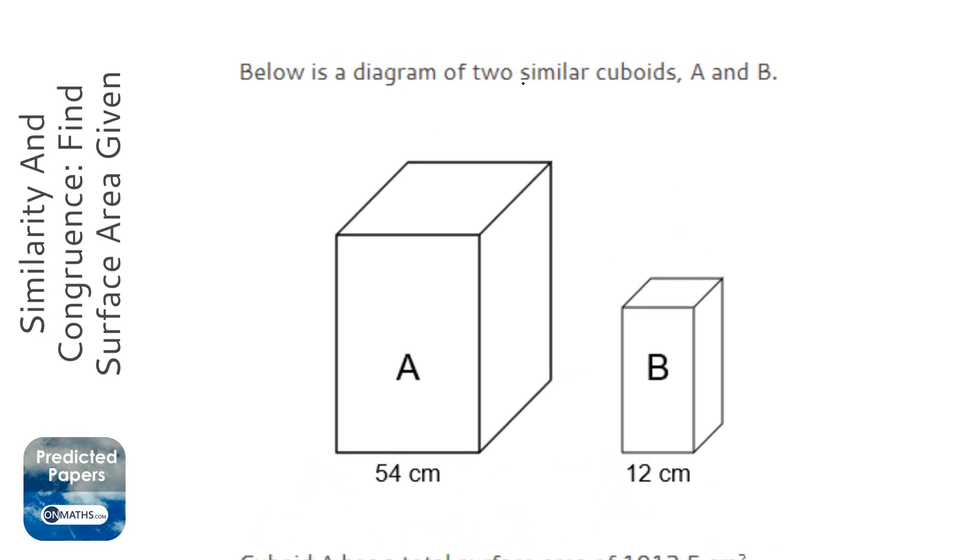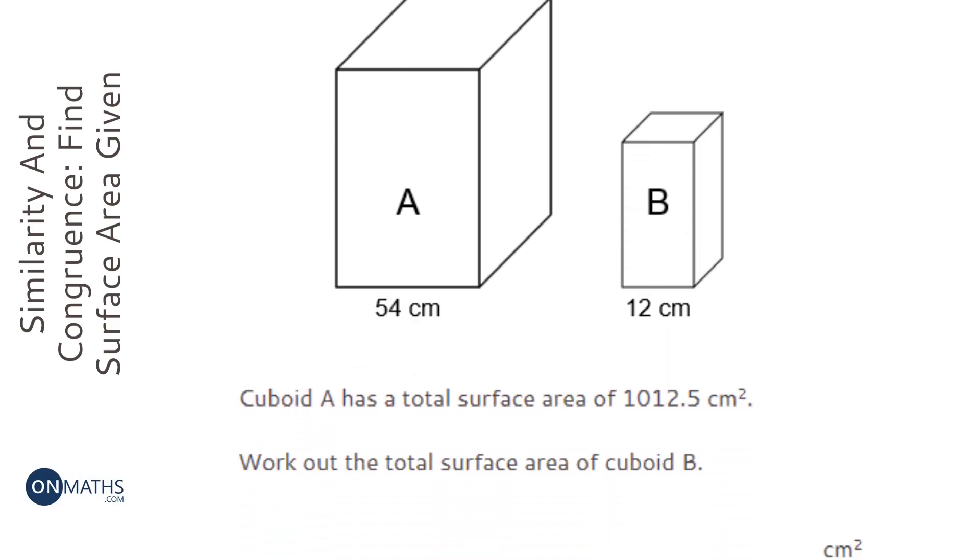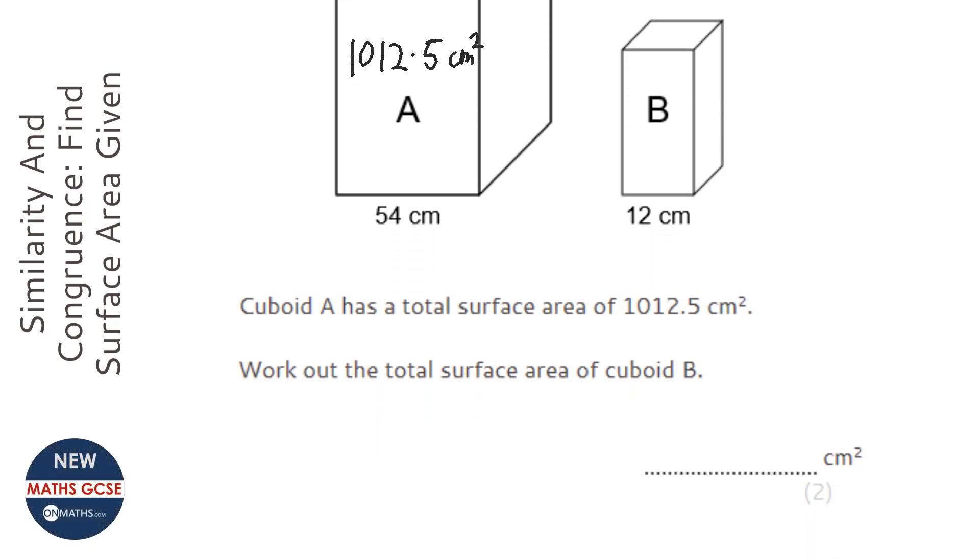We have two similar cuboids, which means one cuboid is a direct enlargement of the other. In this case, A is a direct enlargement of B. We're told the surface area of A is 1012.5 cm². Let me draw in the diagram to clarify which surface area I have and which one I need to get. I need to find the surface area of B.